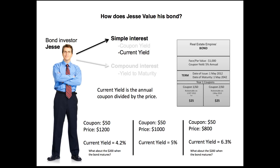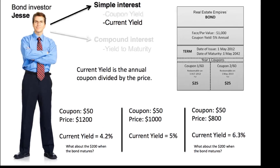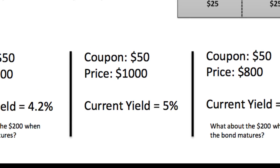If Jesse was going to buy this bond — regardless of how much time had passed since the initial issue date, whether there's one year left or 25 years — the current yield is just that coupon divided by the price. In the first scenario, the coupon is $50 and the price Jesse pays is $1,200, giving a current yield of 4.2%. When the face value matches the price at $1,000, the current yield equals the coupon yield of 5%. And if he buys at a discount of $800, the current yield rises to 6.3%.